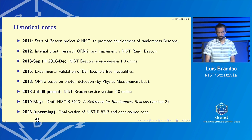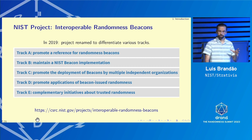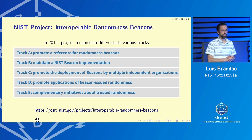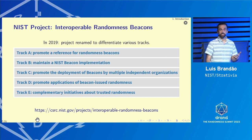We're hoping this year we'll have the final version of this draft published — no longer draft — and also publish the open source code of the NIST beacon. In 2019 we decided to be more clear about different tracks of the project so it's not confused just with the NIST beacon implementation. As track A we want to promote a reference for randomness beacons that other beacons can use. As track B, the NIST randomness beacon is an implementation of this reference. Also, this presentation is different from others in that we're presenting a centralized randomness beacon, but the vision is that it's used in an ecosystem with many beacons — an ad hoc decentralization.